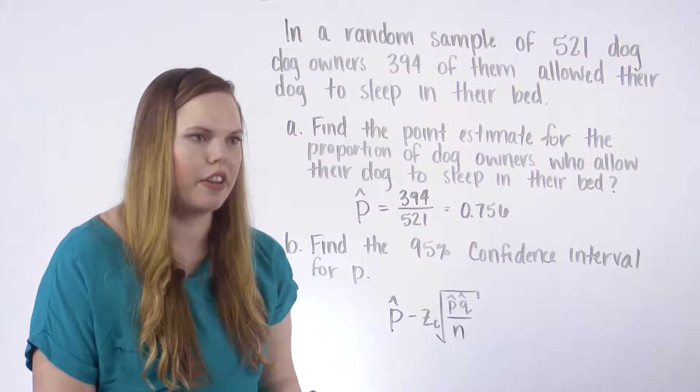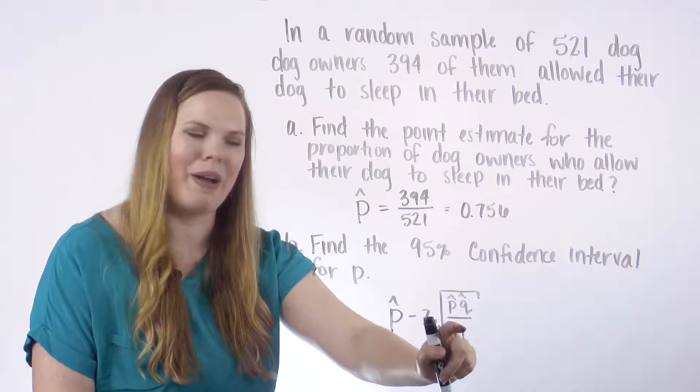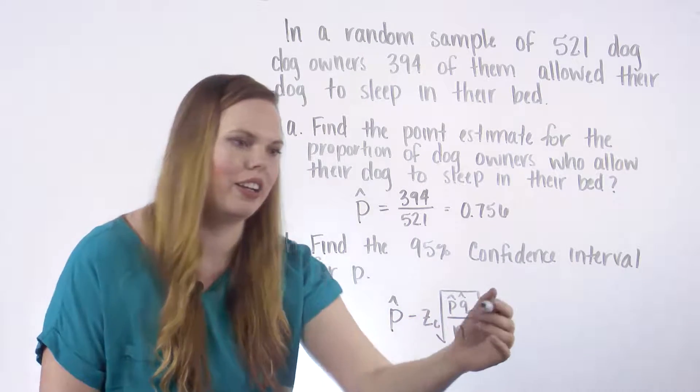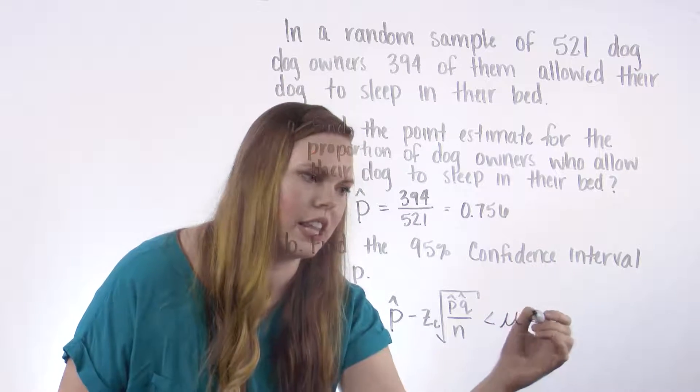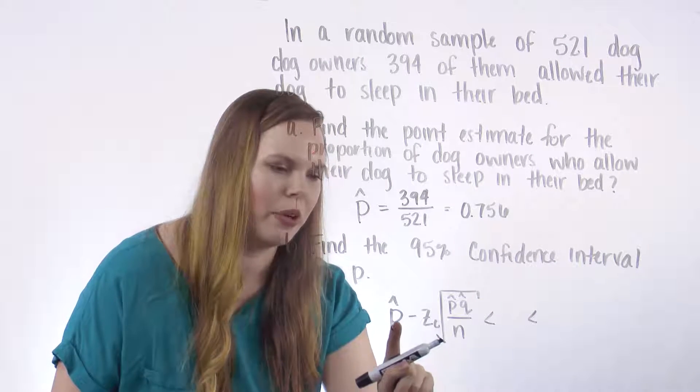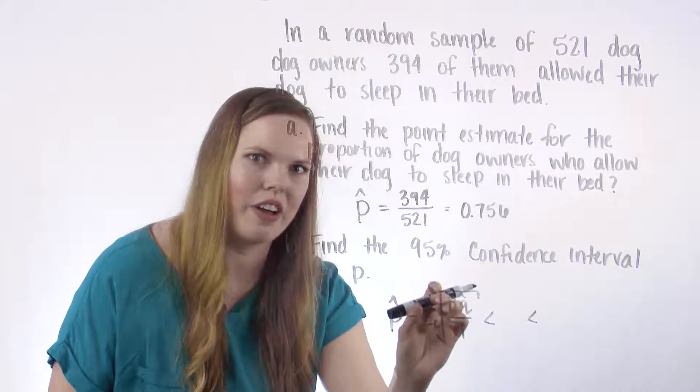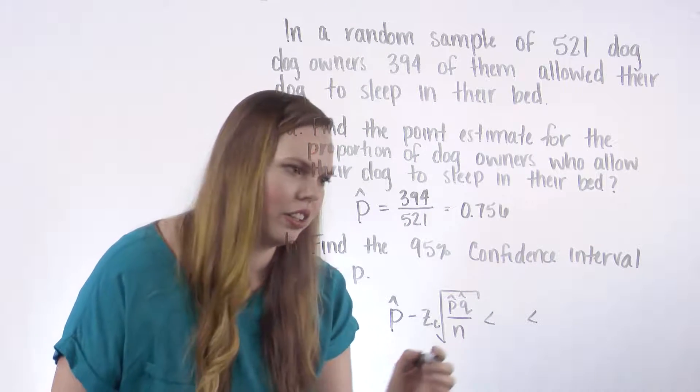The standard deviation of this binomial is P hat times Q hat divided by N. Take the square root of that. So very similar to other confidence interval formulas in that you're taking the point estimate, you're using a critical value Z in this case, and then your standard deviation here.